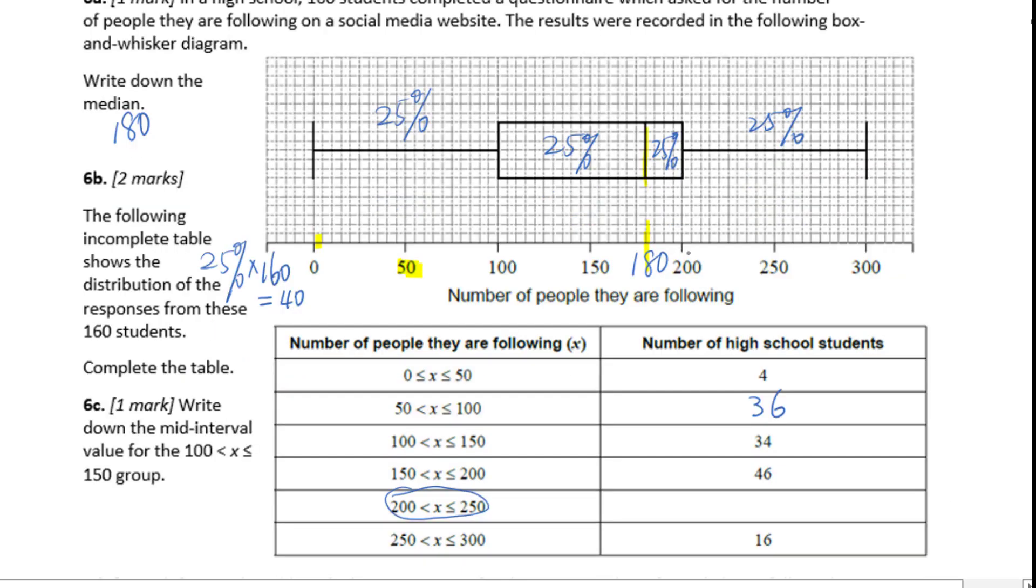We know from 200 to 300, this is 25%, which means 40 people. 40 minus 16 will be 24.